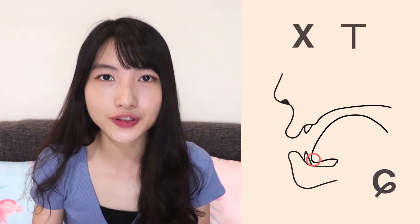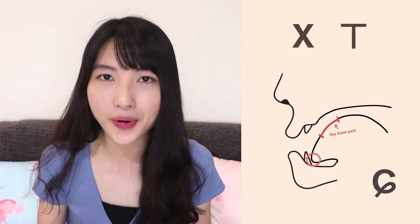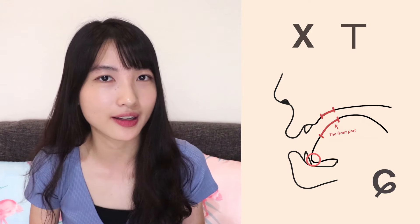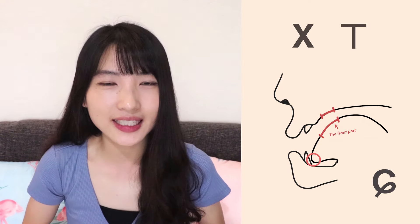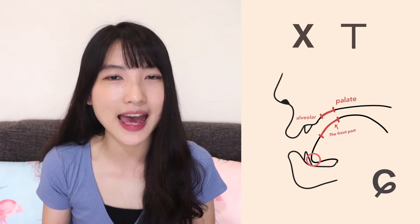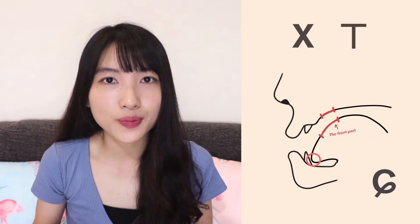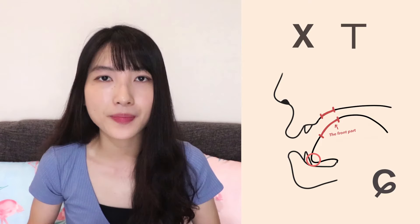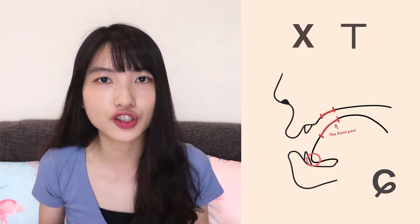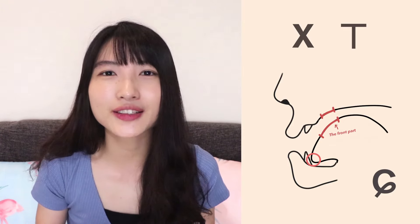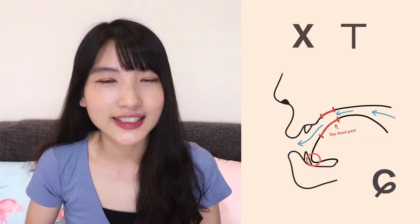This symbol represents a tongue position like this. The first thing you need to do is put the tip of your tongue down behind the bottom of your teeth, and then move the front part of your tongue towards the position pointed out here — specifically, before the palate and after the alveolar. Move the front part of your tongue towards here, but do not touch it, just like the picture shows. Also, pay attention to your lips: your lips should spread wide like you're smiling. Then let the air out: 'x'.